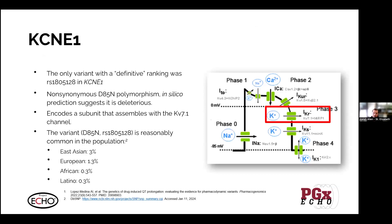The only variant that came back with a definitive ranking was a particular variant in KCNE1, which is in the IKR channel. The SNP is RS1805128, and it encodes a non-synonymous aspartate to asparagine polymorphism. In silico prediction models suggest this is likely a deleterious mutation that will impact the function of this protein.